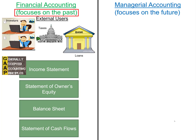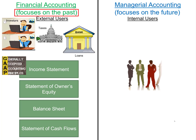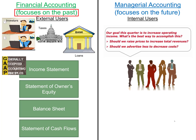Managerial accounting, on the other hand, provides information to internal users such as managers and employees. The accounting information in the financial statements is not detailed enough to assist managers with all the decisions they must make. So managerial accounting is used to help managers make better decisions about the company going into the future. Managerial accounting focuses on the future, not the past.